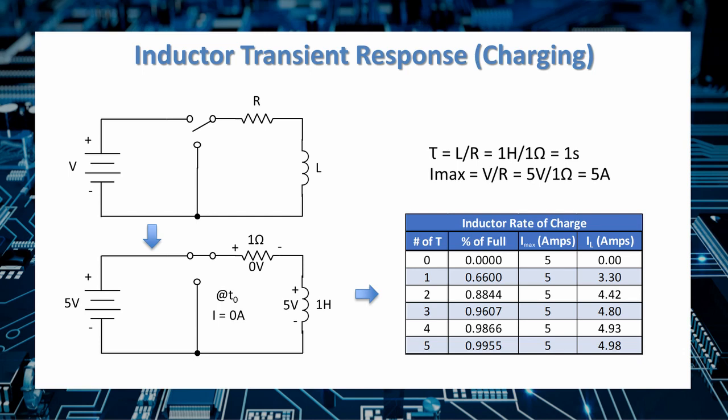That means that the inductor will charge from zero amps to five amps over five tau, or five seconds. You can see in the table that we've calculated out how much it charges for each time period. And like a capacitor, it never actually reaches full value. It just continues to approach it asymptotically forever. However, for all practical purposes, and for our own engineering sanity, we assume that it's fully charged within five time periods.